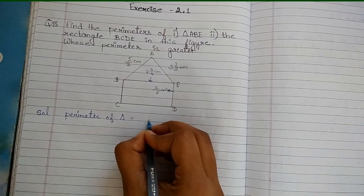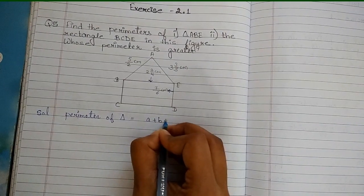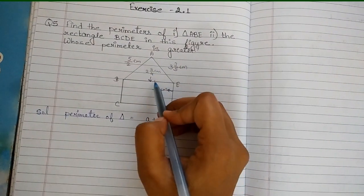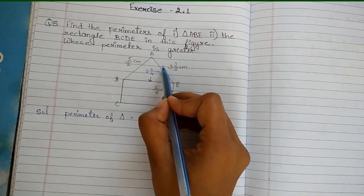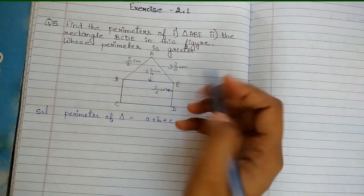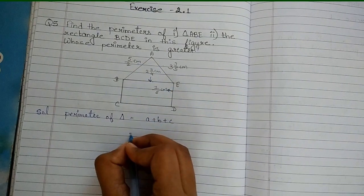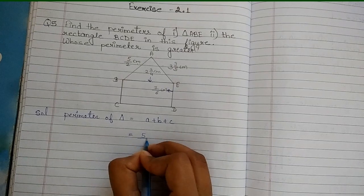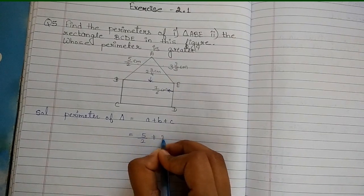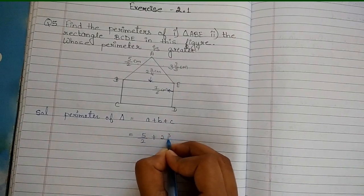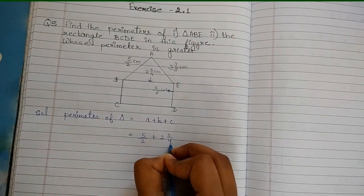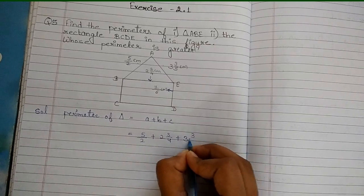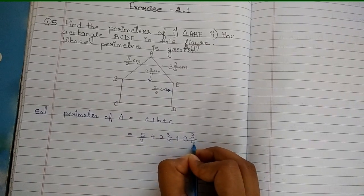What is the perimeter of a triangle? It is A plus B plus C — that means we have to add all sides. So here the sides are: 5/2, plus 2 and 3/4, plus 3 and 3/5.